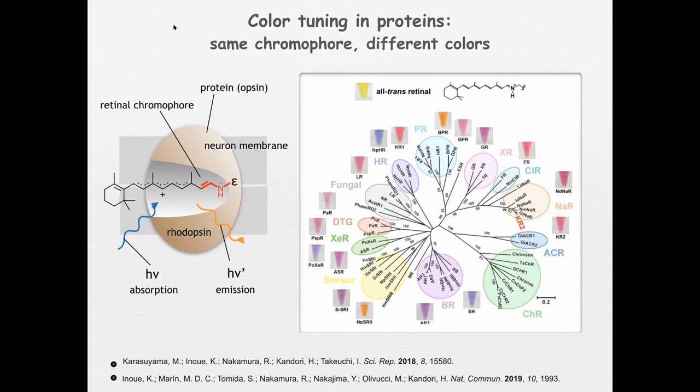They want to change the sequence in the laboratory to see what happens and to learn how to engineer new proteins that absorb further to the red. There is a very important reason for this effort: this family of proteins, the rhodopsins, are becoming important tools for investigating the working of biological neural networks — basically the brain. If you shine light on them and they are expressed at the neuron level, they can trigger a nervous signal, silence a nervous signal, or even visualize the traveling of a nervous signal along a neural network.